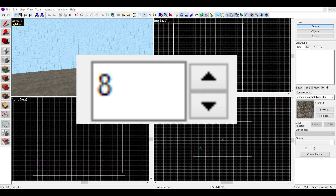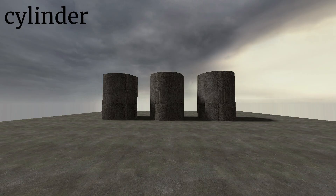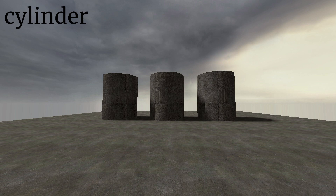This right dial here increases or decreases the side count. First is the cylinder. The first one has 8 sides, the second has 15, and the third has 25. Notice how the more sides it has, the more smooth it is.